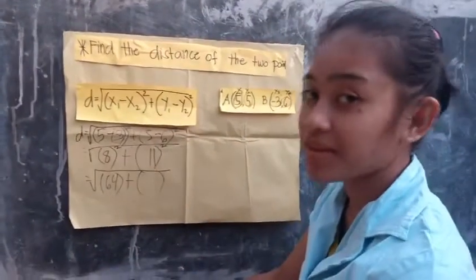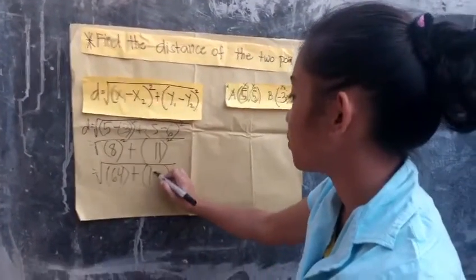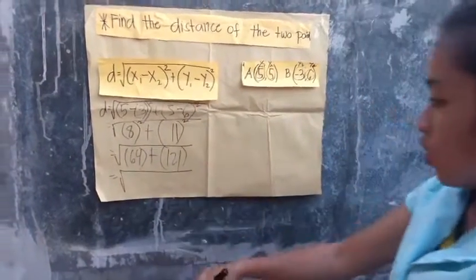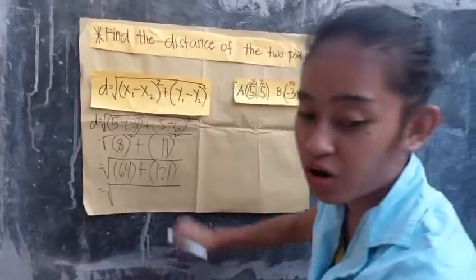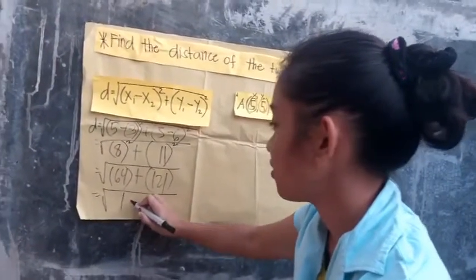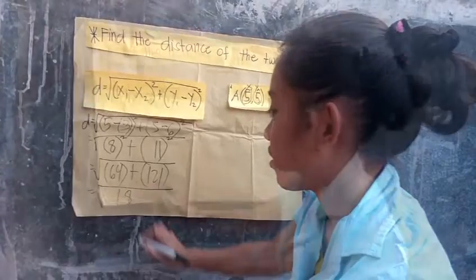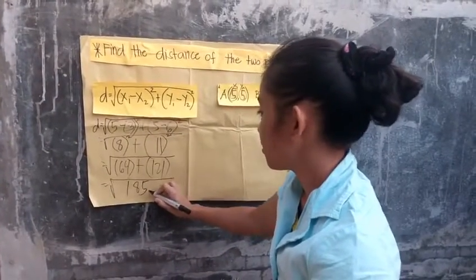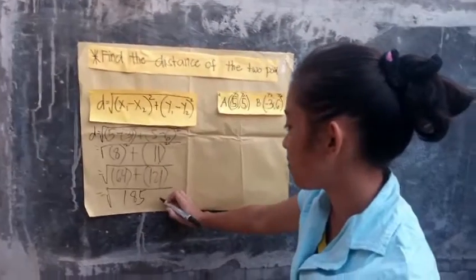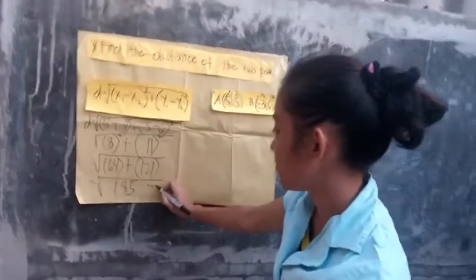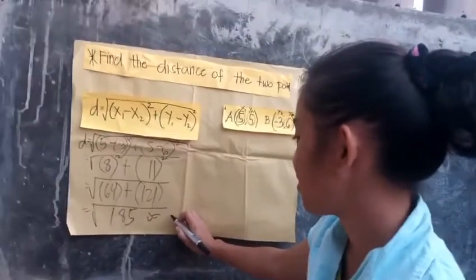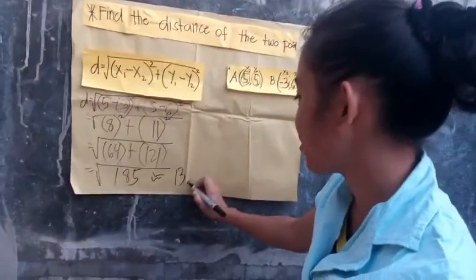So 8 times 8 equals 64, and negative 1 times negative 1 equals 1. Then 11 times 11 equals 121. We need to add 64 and 121, which is 185. The square root of 185 to the decimal is 13.6.